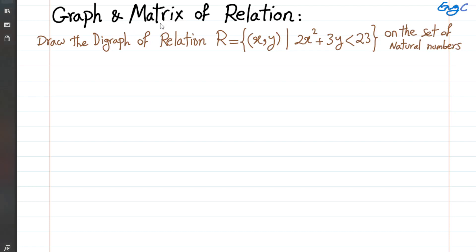Constructing a graph and forming a matrix of relation is shown in this example, in which we want to draw the digraph of this relation on the set of natural numbers — integers that are non-negative, starting from 0, 1, 2, 3, onward — for valid choices for x or y in this two-tuple. The relation is defined by this set builder notation, so the minimum we can go for x is 0.